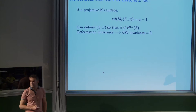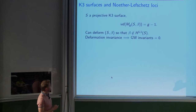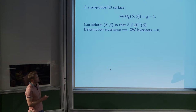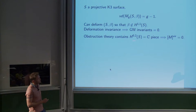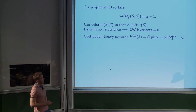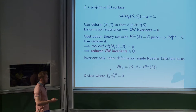Now we do K3 surfaces. The virtual dimension of the moduli space is genus minus one. The reason for the minus one is that I can deform my K3 surface so that my homology class is no longer of type (1,1), so there can't be any curves and the answer must be zero. The obstruction theory contains a trivial piece which tells you whether the curve class has any (0,2) part, making the virtual cycle zero. You can remove this trivial piece to get a reduced obstruction theory with virtual dimension g in genus g.